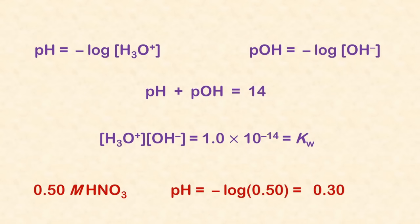Strong acids and strong bases ionize completely. So, for example, in 0.50 molar nitric acid, the concentration of the hydrogen ions is 0.50 molar. So, to find the pH, you just take the negative log of 0.50.